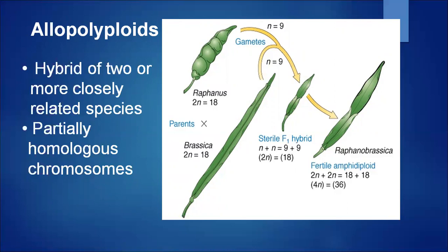In amphidiploidy, if one parent has genotype AA and another has genotype BB, the Raphanus-Brassica hybrid produces AABB — that is amphidiploid in nature.